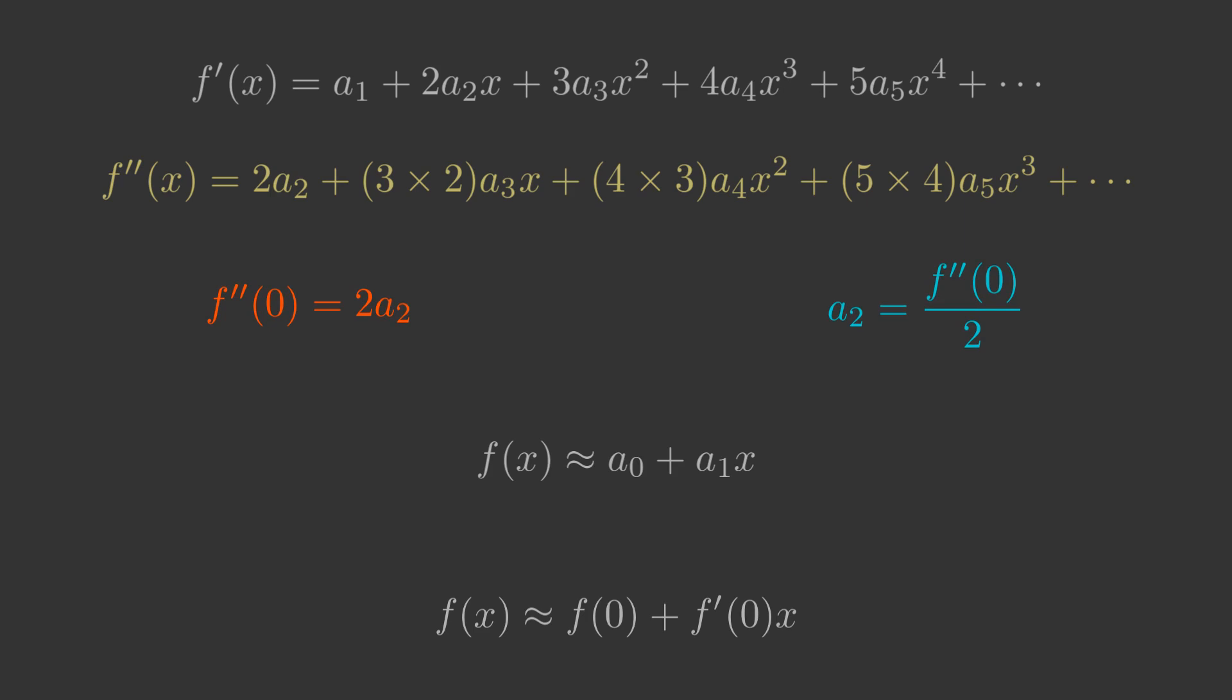We can now use the approximation f of x is a0 plus a1x plus a2x squared. So f of x is f of 0 plus f prime 0x plus f prime prime 0 over 2 times x squared.